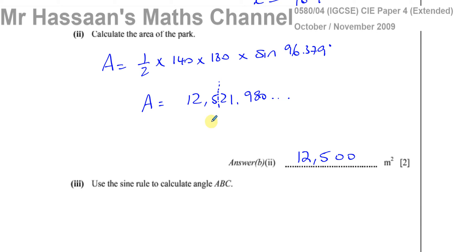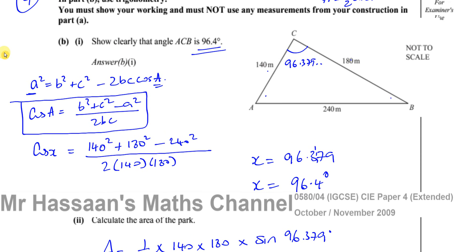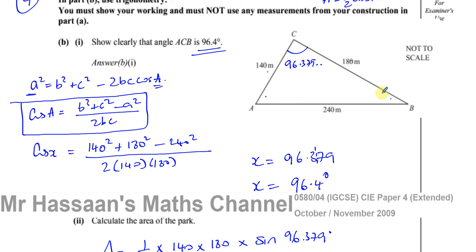Part three says, use the sine rule to calculate ABC. Because we could have used the cosine rule again to find ABC if we wanted to. We could have used a similar method like this. We could have said the cosine of this angle equals 180 squared plus 240 squared minus 140 squared over 2 times 180 times 240. And we've got it. But they want us to use the sine rule.